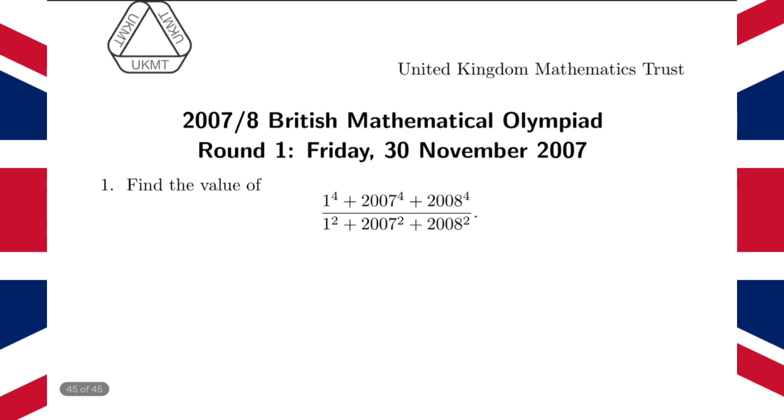So we're trying to find the value of 1 to the power 4 plus 2007 to the power 4 plus 2008 to the power 4, all divided by 1 squared plus 2007 squared plus 2008 squared. You could technically work out what each of these terms are, work out what 2008 to the power 4 is, 2007 to the power 4 is, add them all up, and then divide.